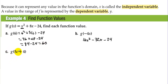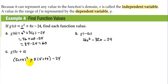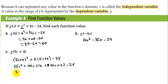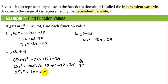For letter c, we plug in 5c plus 4 for x: we have (5c + 4) squared plus 8 times (5c + 4) minus 24. Expanding: 25c squared plus 40c plus 16, then plus 40c plus 32, then minus 24. Combining like terms: 25c squared plus 80c, and 16 plus 32 minus 24 gives 24. So we get 25c squared plus 80c plus 24.